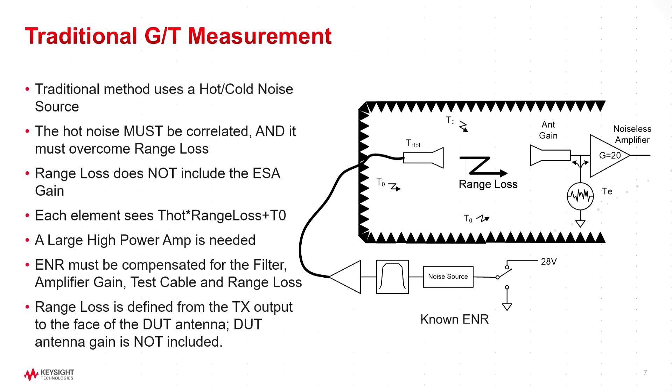The traditional way of making a G/T measurement is you use a Y factor noise source that goes between hot and cold, but you have to overcome the range loss, which might be tens of dB, maybe 50, 60, 70 dB. So you have to amplify the noise source and filter the noise source because you can't amplify a broadband noise source by 70 dB or you'll take megawatts to get out of here. So you have to filter it and then amplify it and you have to compensate for all of this. And still the noise by the time it gets here may not be significantly greater than the T0. So it causes lots of trouble.